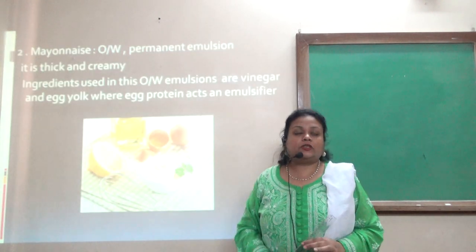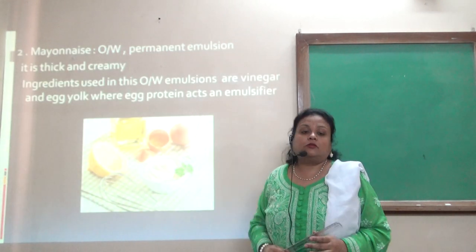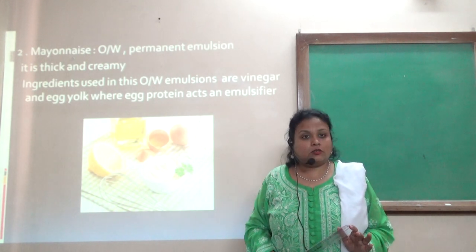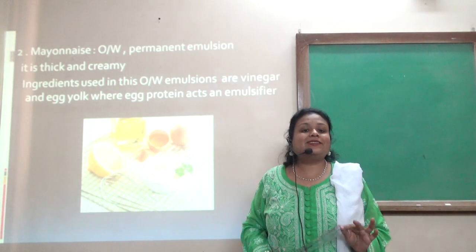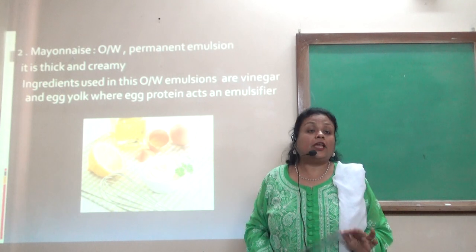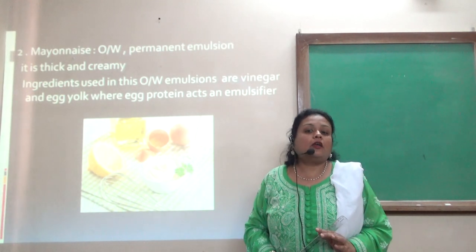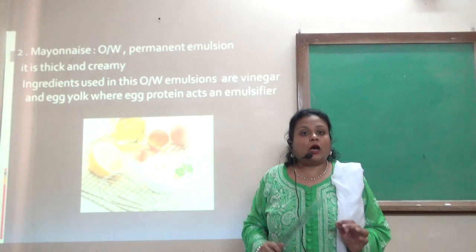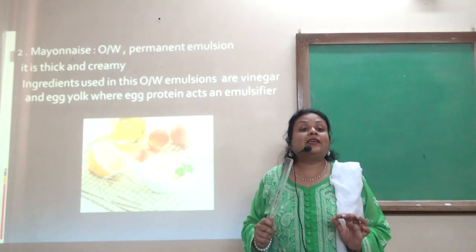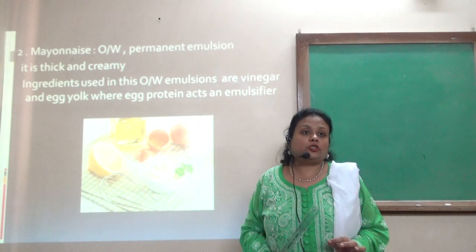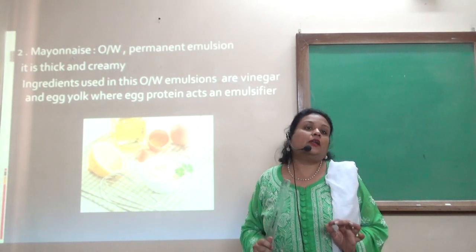Next, mayonnaise. Mayonnaise is again an oil-in-water emulsion and a permanent emulsion. It is thick and creamy. Ingredients used in preparing mayonnaise are vinegar and egg yolk. Egg contains lecithin, which is a natural emulsifier, so it automatically becomes a permanent emulsion.